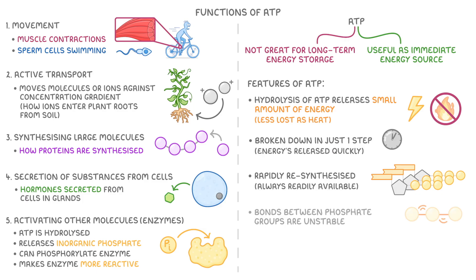And on top of that, the bonds between phosphate groups are unstable, meaning they have a low activation energy and are very easily broken. Finally, ATP is soluble, so it can be easily transported around cells to wherever it's needed.